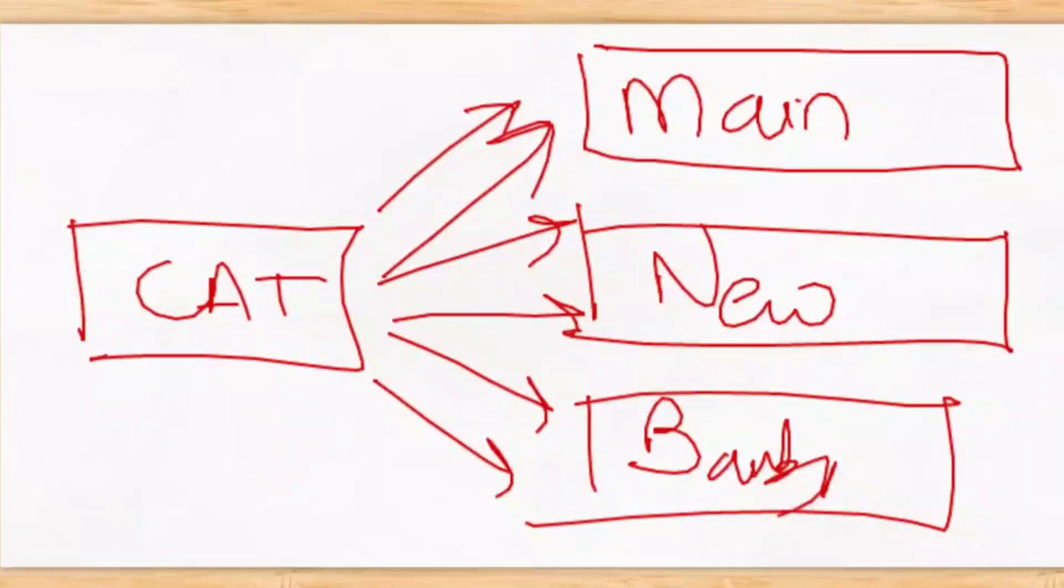Main IIMs, new IIMs, baby IIMs. Depending upon your scores and your academic record, they will decide which IIMs will call you. So we just need to fill CAT form. We don't need to fill anything else. I just have to fill the CAT form and wait and watch.